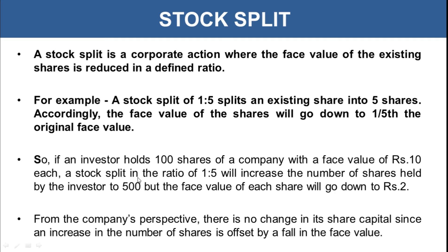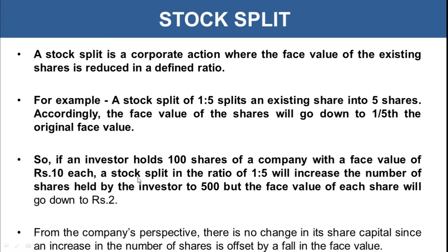For example, if an investor holds 100 shares with a face value of rupees 10 each, a stock split in the ratio of 1:5 will increase the number of shares to 500. The face value of each share will reduce to rupees 2 — that is, 10 divided by 5. The overall market value of the total shares remains the same; only the number of shares has been increased by reducing the price of each share.